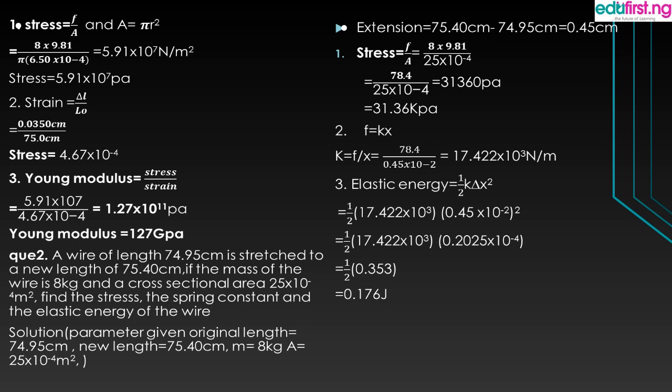Young's modulus equals stress over strain. Our stress is 5.9 times 10 to the power 7 Pascal, and our strain is 4.67 times 10 to the power minus 4. Dividing these gives 1.24 times 10 to the power 11 Pascal. Converting to gigapascal gives approximately 127 GPa. That concludes the first question.